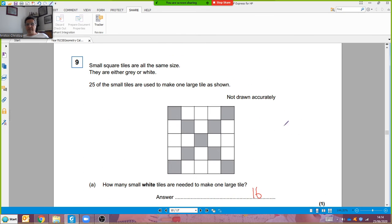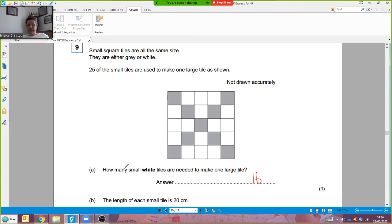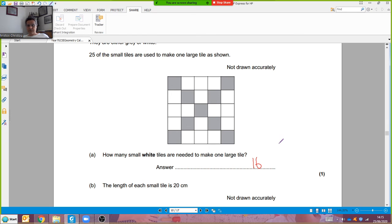Question 9. Many of you misunderstood and misread this as well. Small square tiles are all the same size, they are gray or white. 25 of the small tiles are used to make one large tile. How many small white tiles do you need to make one large tile? Many of you wrote down 25. I don't see 25 white tiles, I see 16. 4, 4, 4, 4. 16 white tiles to make a bigger tile.